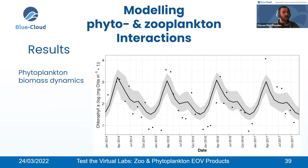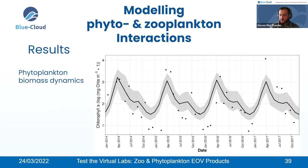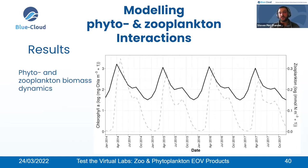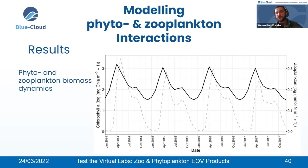Results you can get from the model include phytoplankton biomass dynamics — biomass expressed as chlorophyll A on a log scale over time. Solid black lines are mean values simulated by the model, surrounded by the shaded area (uncertainty), and black dots are field observations. You can also examine the interaction between phytoplankton (solid black line) and zooplankton (dashed line) over time. There is a clear peak in phytoplankton followed with a time delay by a peak in zooplankton — a classic textbook example of a prey-predator interaction, showing that zooplankton grazes on phytoplankton in the model.